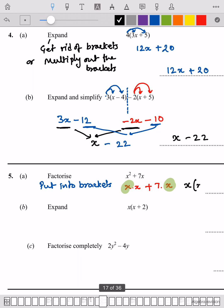Expand: as you know, multiply the bracket out. So x times x is x squared, x times 2 is 2x. Factorize then put into the brackets. So let's break it down: 2 times y times y minus 4. The 4 is written as 2 times 2.